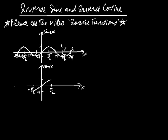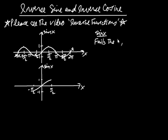The first thing to notice about the sine function graphed here is that it's periodic. One important aspect of a periodic function is that the output — the y-coordinates — repeats. Because of this, sine fails the horizontal line test, meaning a horizontal line intersects the curve more than once.